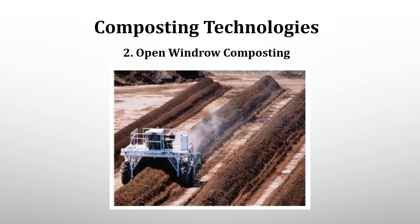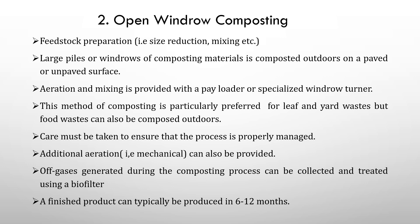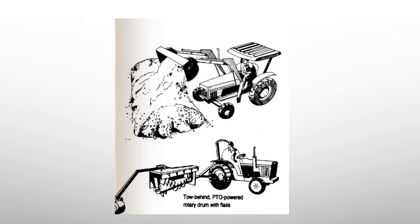The second type is open windrow composting. It involves feedstock preparation — size reduction, mixing, etc. Large piles or windrows of composting materials are composted outdoors on a paved or unpaved surface. Aeration and mixing is provided with a pale odor or specialized windrow turner. This method is particularly preferred for leaf and yard waste, but food waste can also be composted outdoors. Off gases can be collected and treated using a biofilter. A finished product can typically be produced within 6 to 12 months.